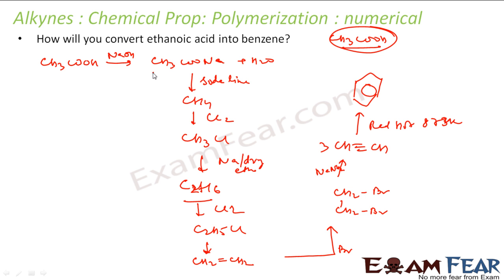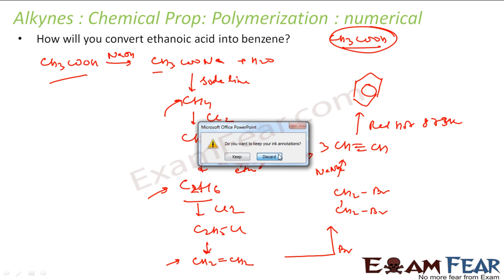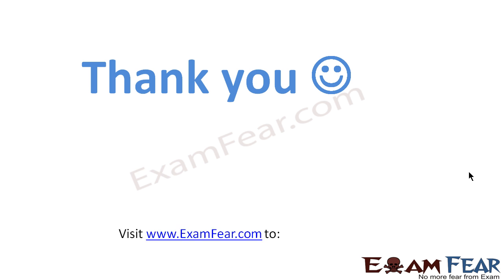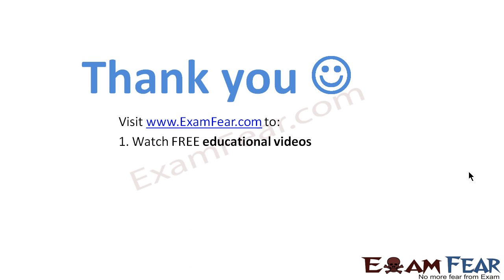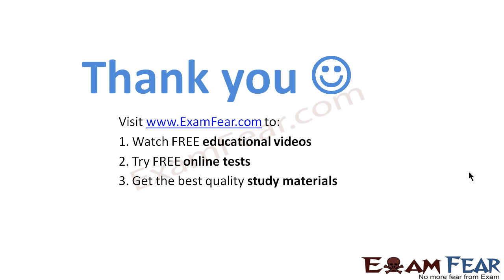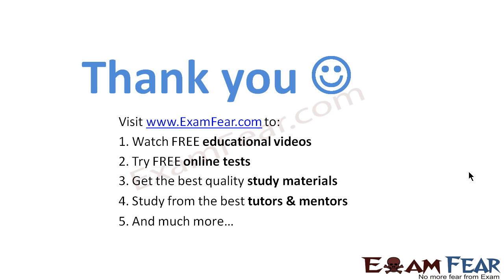So to summarize: from CH₃COOH I got CH₃COONa, from which I got methane, then made ethane, then ethylene, then ethyne, and finally benzene. Thank you. Visit examfear.com to watch free educational videos, try free online tests, and get the best quality study materials.